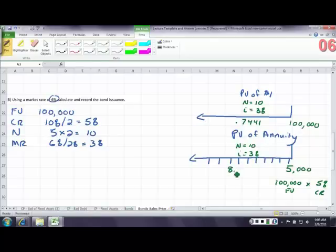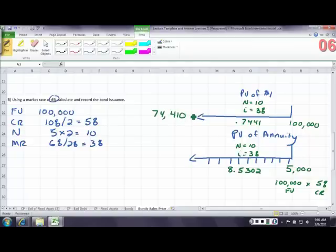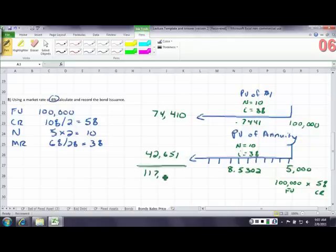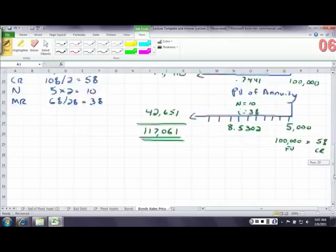100,000 times .7441 equals 74,410. 5,000 times 8.5302 equals 42,651. You add them together, and you have sold the bonds for more than face value.